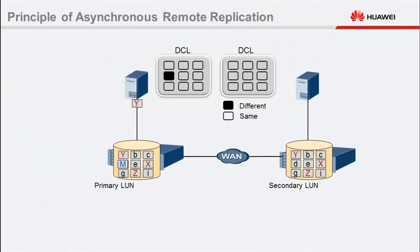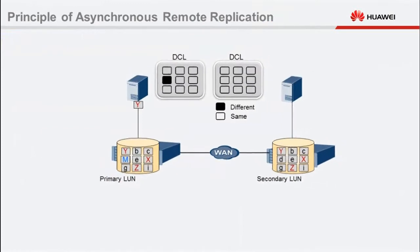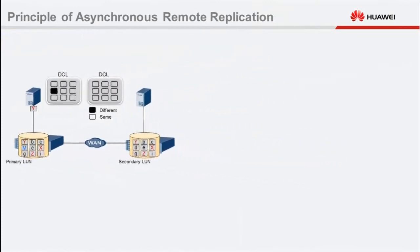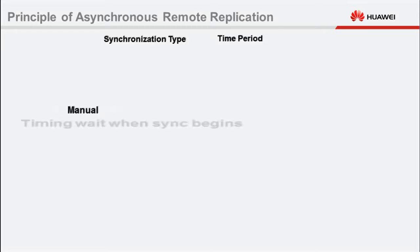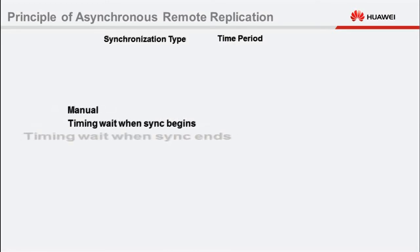How does the storage system control the synchronization period? The storage system controls the synchronization period using two parameters: synchronization type and synchronization period. The period can be expressed in minutes and seconds — here we use minutes as an example. The synchronization type can be manual, timed wait when synchronization begins, or timed wait when synchronization ends.